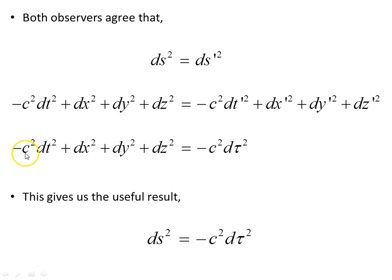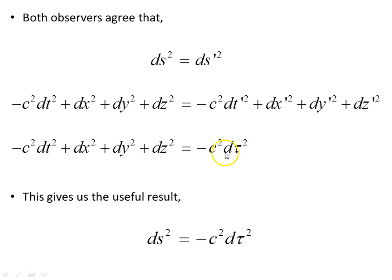For the green observer, he or she records this spacetime interval. For the observer on the spaceship, dX prime, dY prime, dZ prime are 0, so he or she records a simpler expression. This gives us the useful result that dS squared equals minus c squared d tau squared.